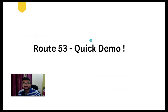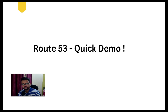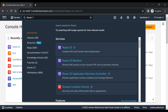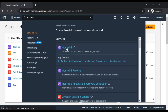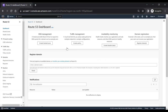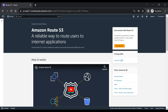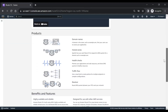Now let's do a quick demo of Route 53. Obviously we can't do much because we can't purchase a domain as it costs money, but I'll show you the UI to give you a feel of how Route 53 looks as a service. Let's go to the AWS console. As always, we search for Route 53 in the search bar. This is the Route 53 dashboard — let's go to the home screen first. This is how it looks, with multiple options available.